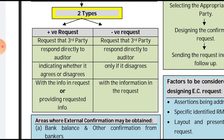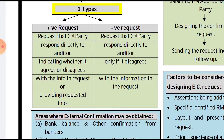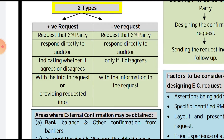There are two types of external confirmation requests: positive and negative. In a positive confirmation request, the auditor requests that the third party respond directly, indicating whether it agrees or disagrees with the information, or by providing the requested information. In a negative confirmation request, the third party is asked to respond only if it disagrees with the information in the request.